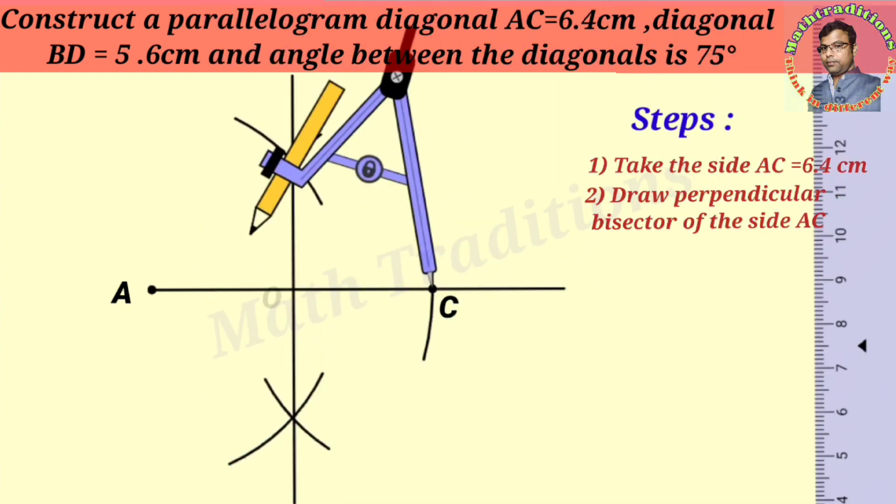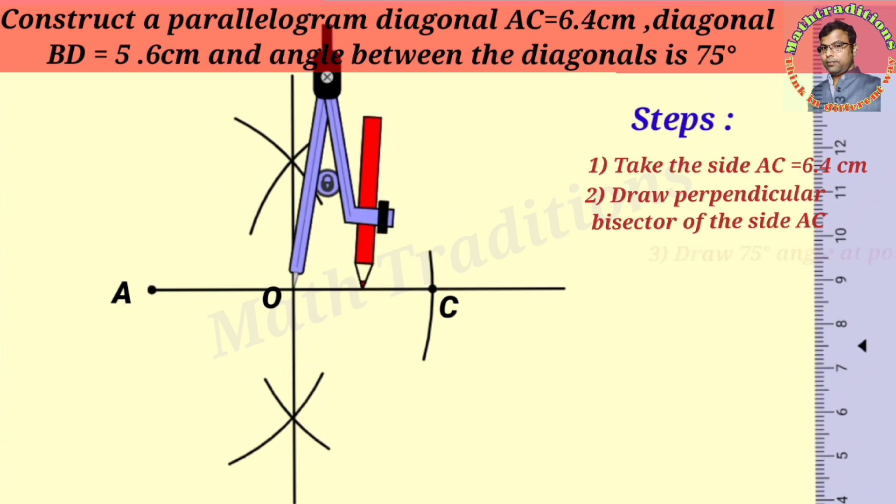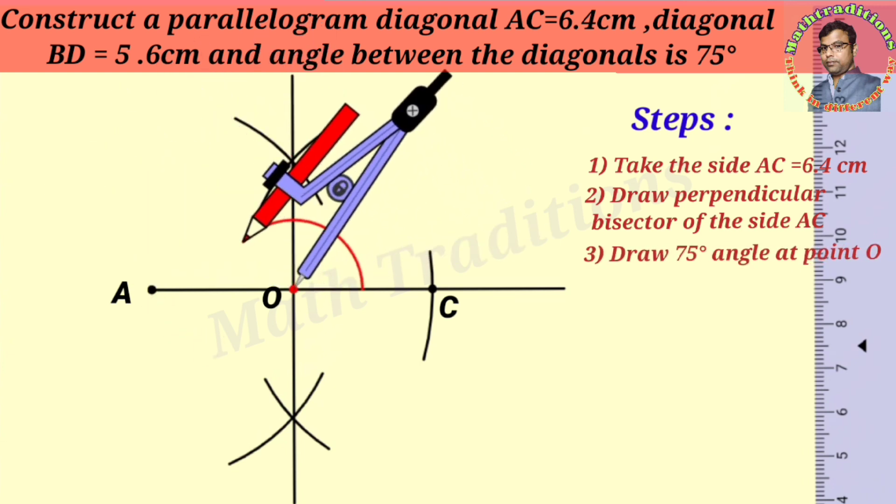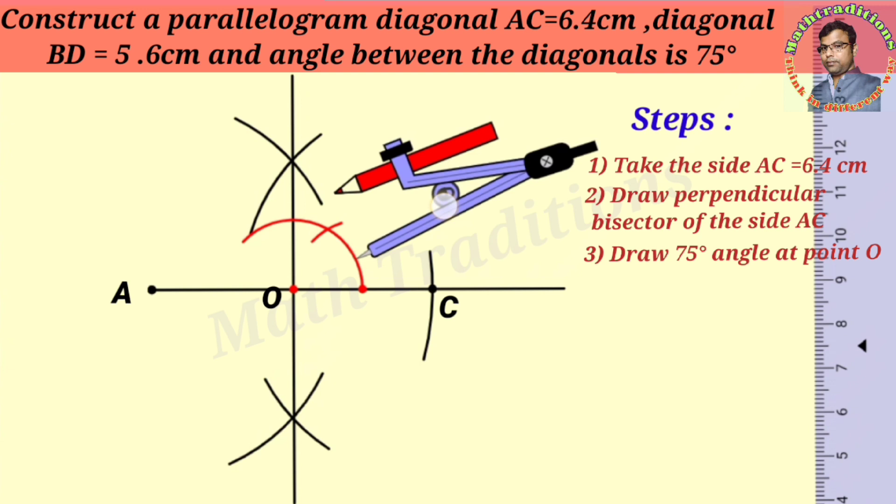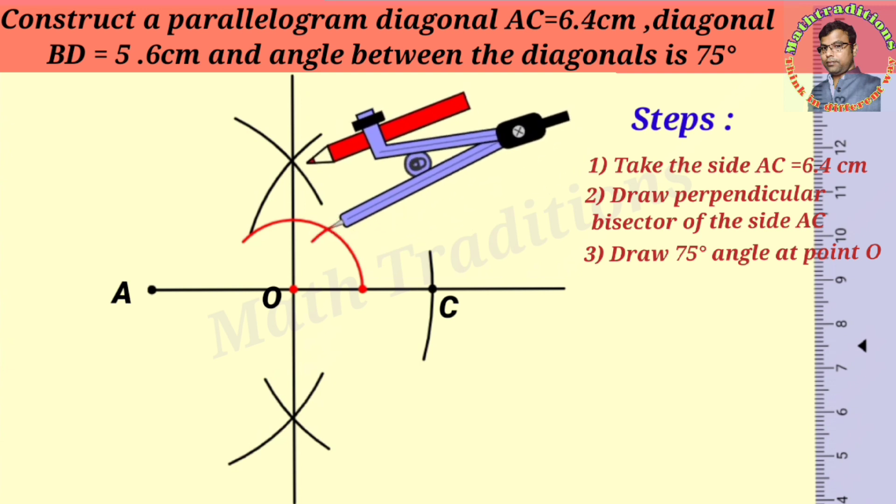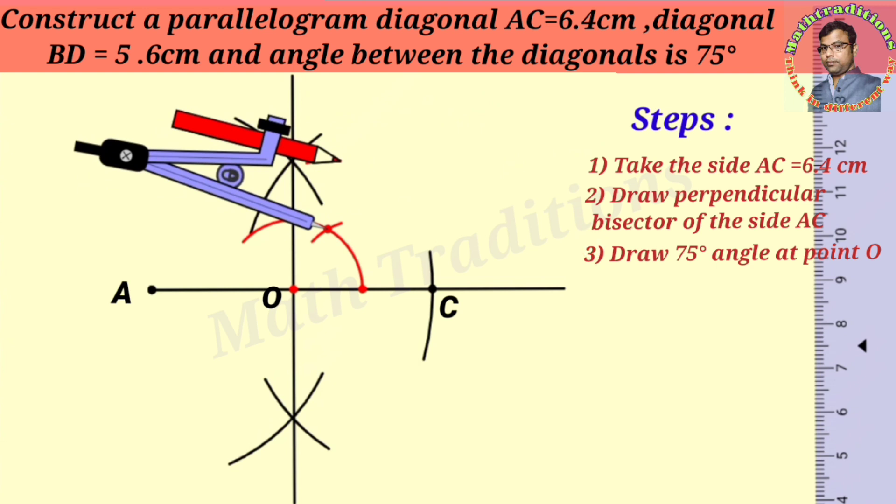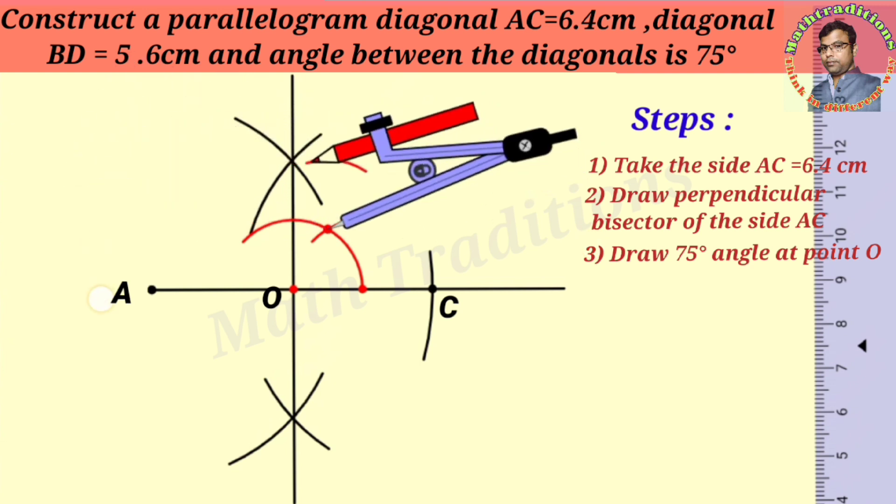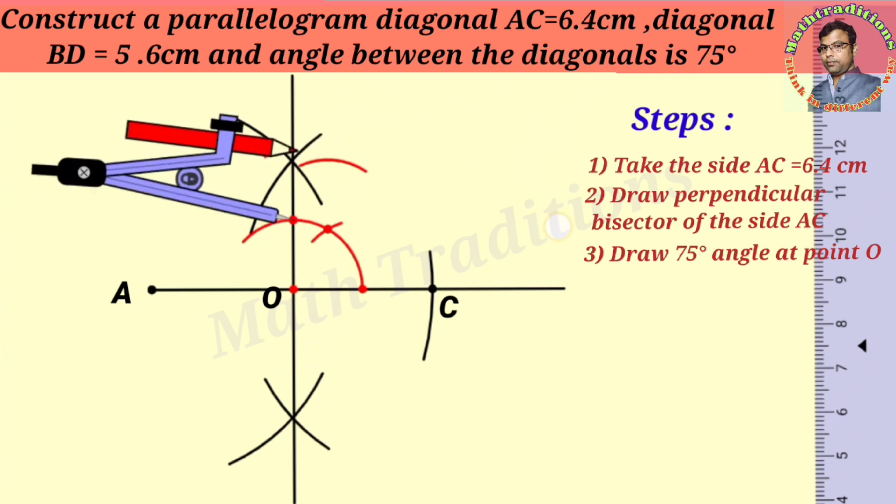Now at midpoint O, we will draw the given angle of 75 degrees, which is the angle between the two diagonals. We have drawn the 75 degree angle.